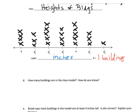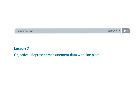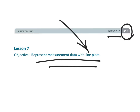Parents and teachers, once students have completed the line plot, you might want to have students create their own questions. That's a fun and great way to assess whether students understand how to read and interpret a line plot. That wraps up third grade module six lesson seven — students are building their own line plots.